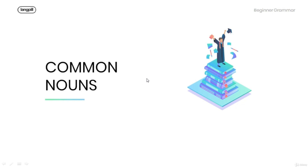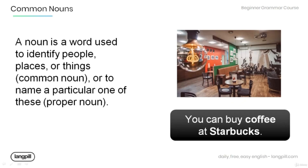Hello, welcome to this tutorial. Today we are going to talk about common nouns. Let's get started. A noun is a word used to identify people, places, or things — these nouns are called common nouns. A noun can also be a word used to name a particular one of these, and that is called a proper noun.